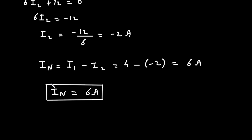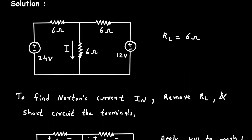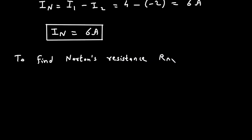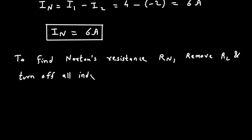Next, we have to find the value of Norton's resistance. This is the second step. To find Norton's resistance Rn, remove RL and turn off all independent sources.